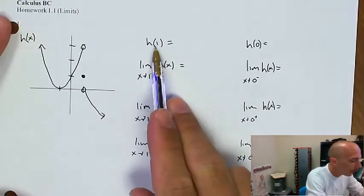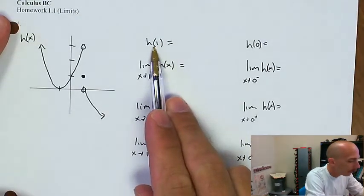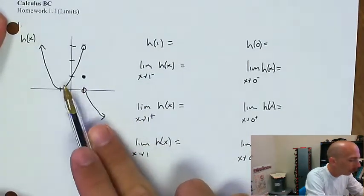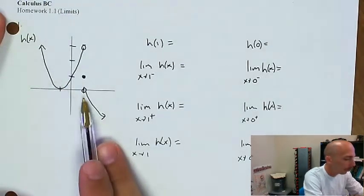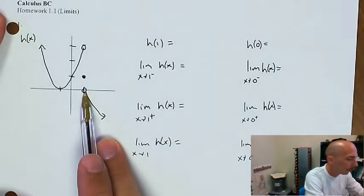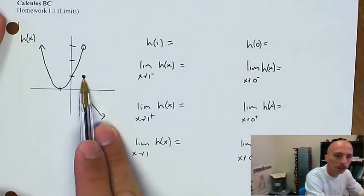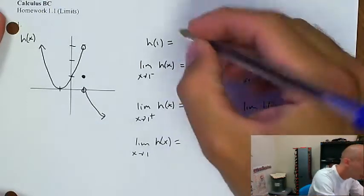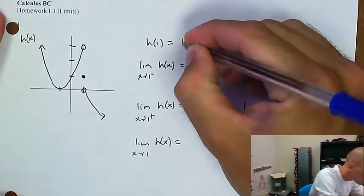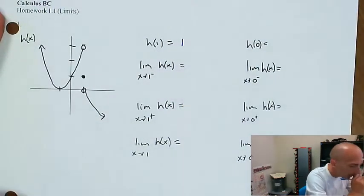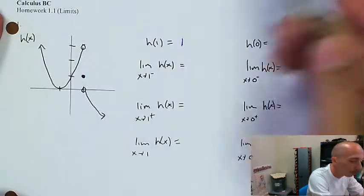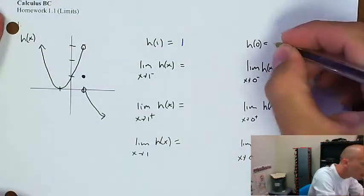h of 1 is the value of h where x is equal to 1. We're seeing a filled-in circle here, so that's going to be 1. h of 0 is going to be the height of the graph over here, and that's also going to be 1.